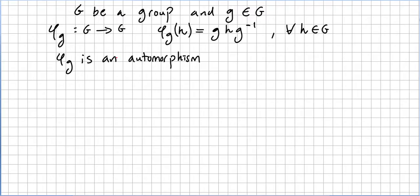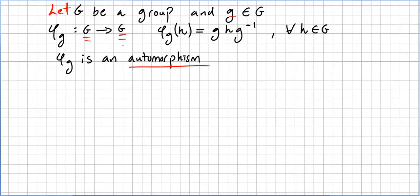In this video we are going to solve a problem, beginning by introducing a very important concept. In a previous video in the group theory course, we introduced the concept of automorphism. Let G be a group and g be an element of that group. We claim that φ_g, mapping from G to G itself, is an automorphism, where φ_g(h) = g · h · g⁻¹ for h in G.